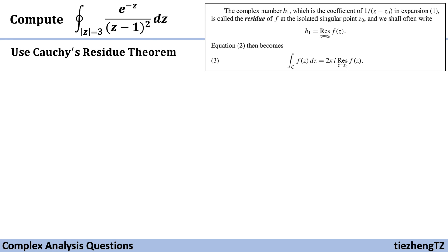If there is the complex number b₁, which is the coefficient of 1/(z-z₀) in the expansion form, then we can say b₁ is the residue of the function f at the isolated singular point z₀. And we can also use this residue to obtain the value of the integral ∫f(z)dz, which is 2πi times the residue.